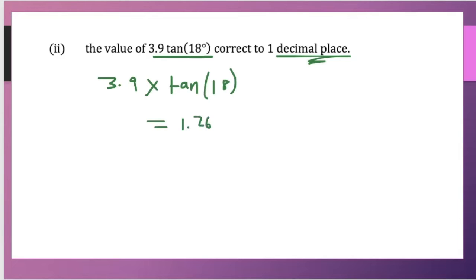But the question says one decimal place. So it's continuing. But since it says one decimal place, behind the two is a six. So we round up. So the answer is 1.3.